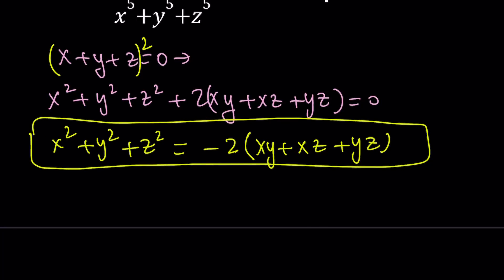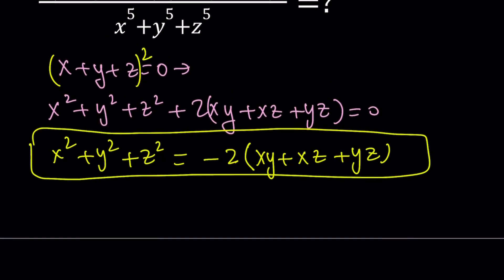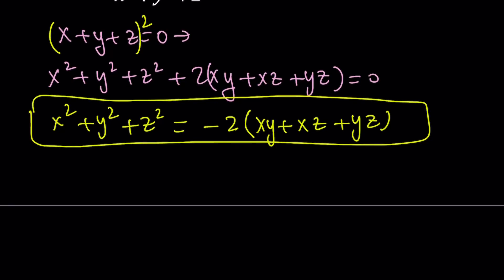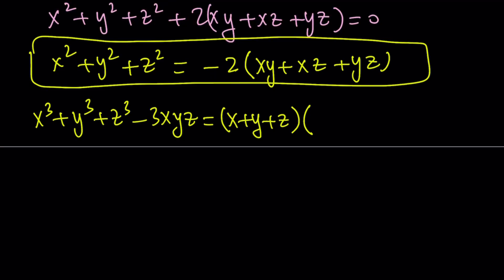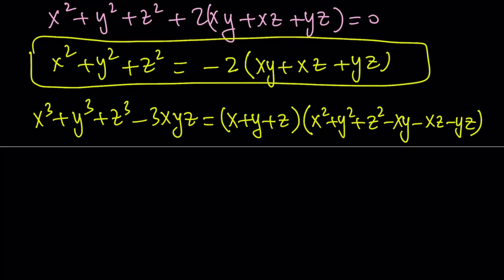Now I want to get something similar for the sum of cubes. I'm going to use a formula we've used before. x cubed plus y cubed plus z cubed minus 3xyz is factorable, and one of the factors is x plus y plus z. The other factor is quadratic: x squared plus y squared plus z squared minus xy minus xz minus yz. This second factor can also be written as one-half of (x minus y) squared plus (x minus z) squared plus (y minus z) squared, which shows it's always greater than or equal to 0.